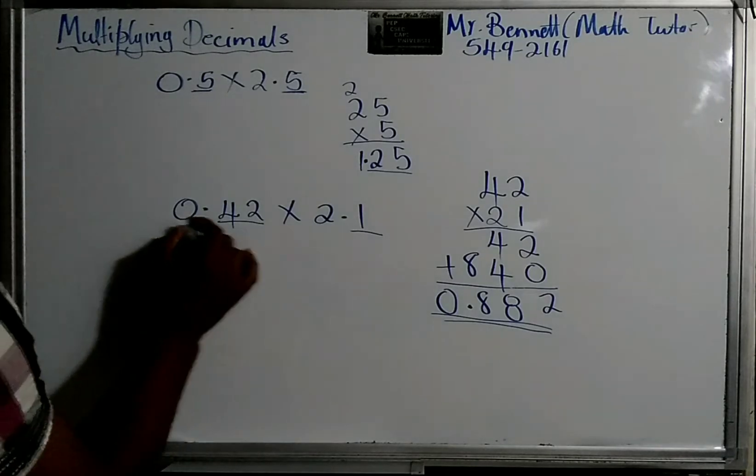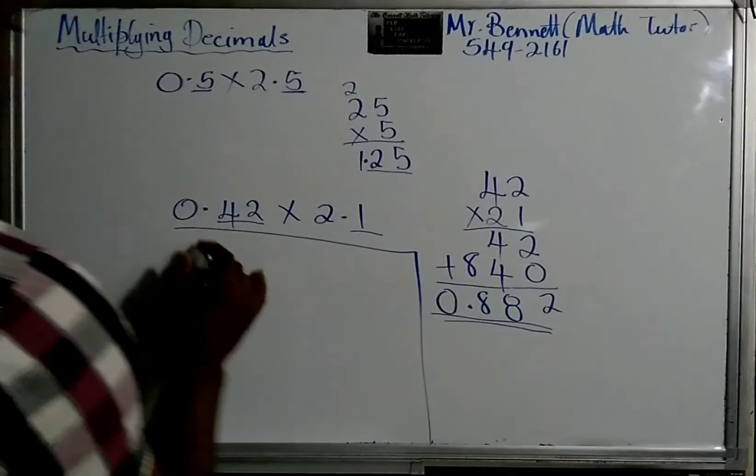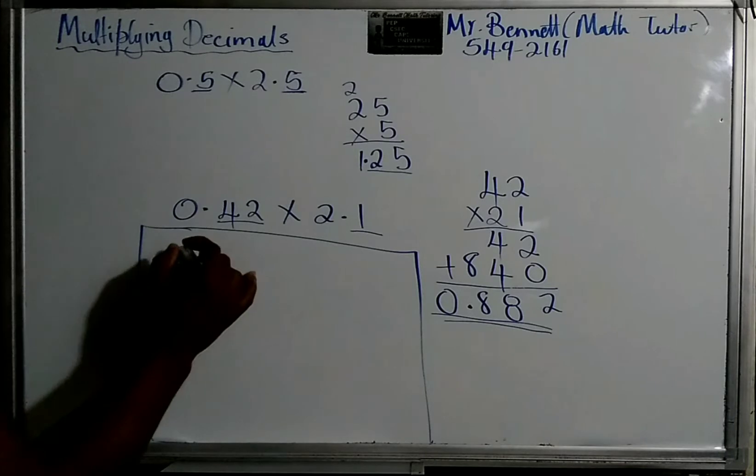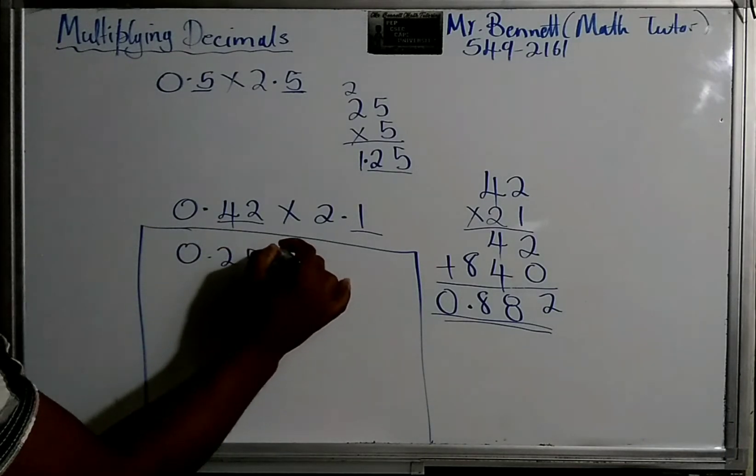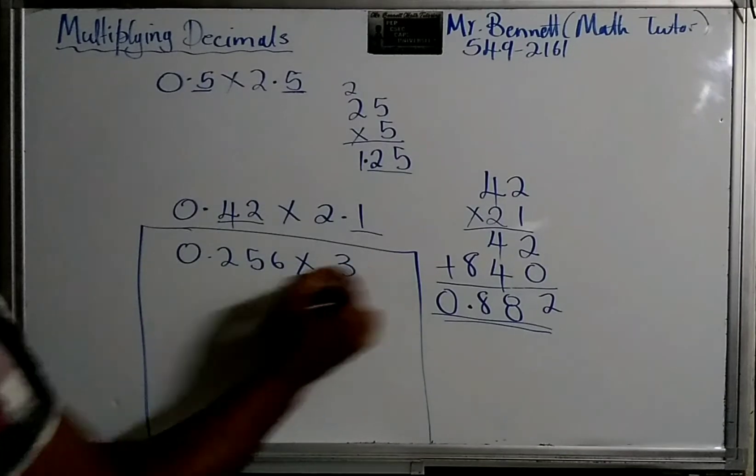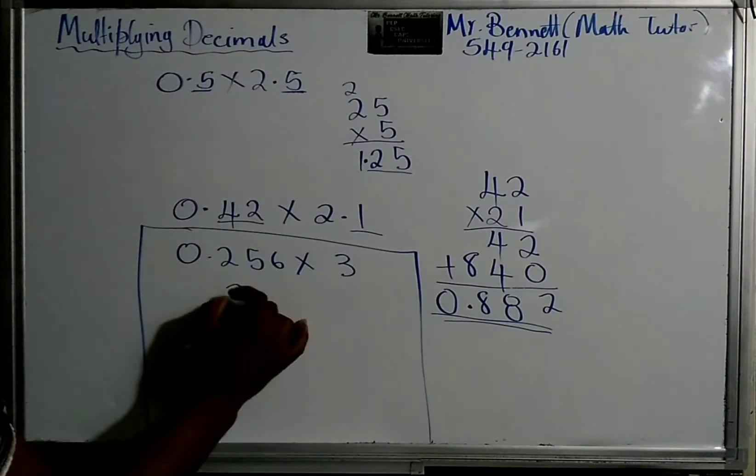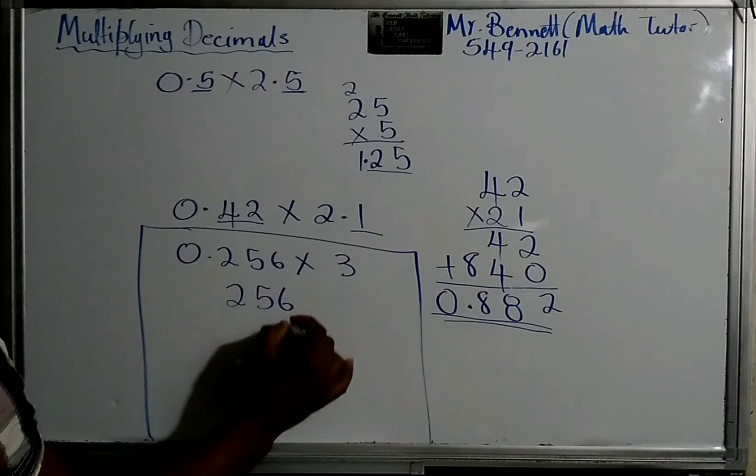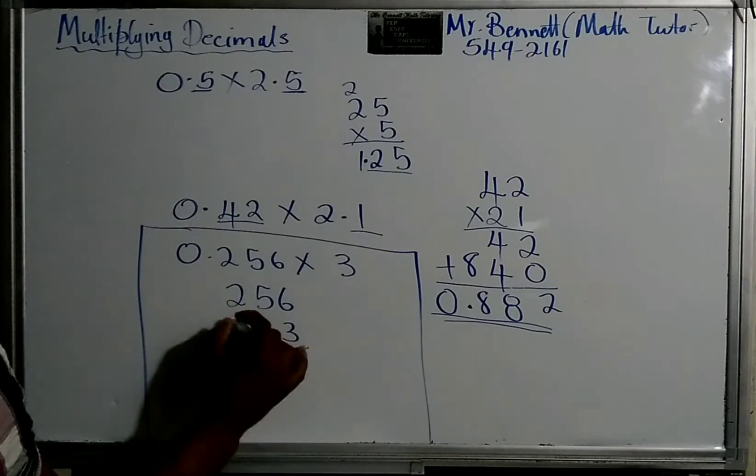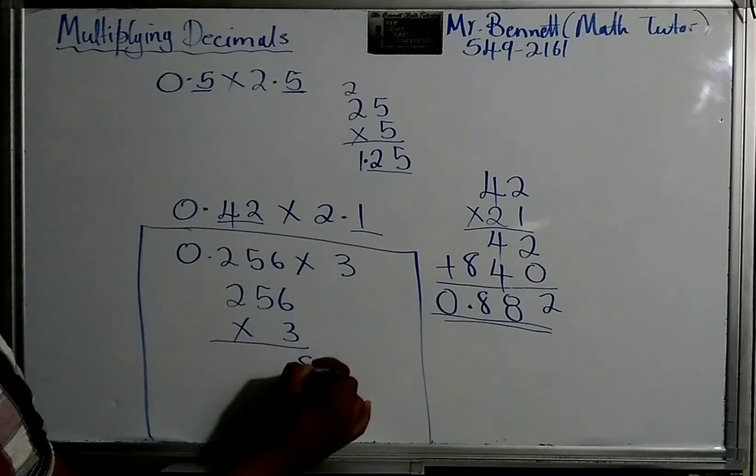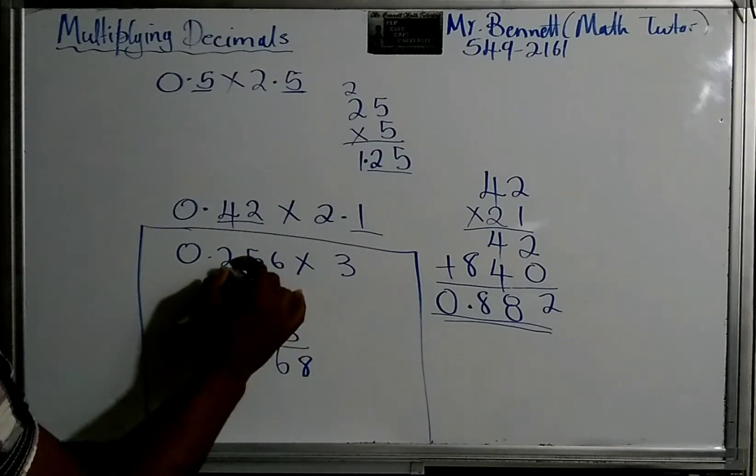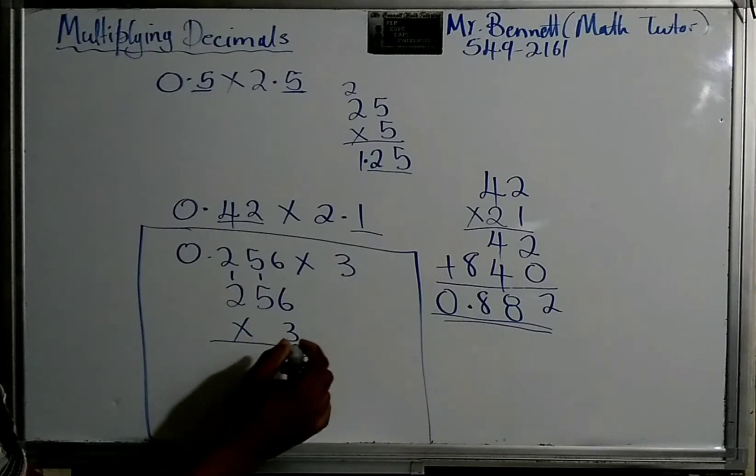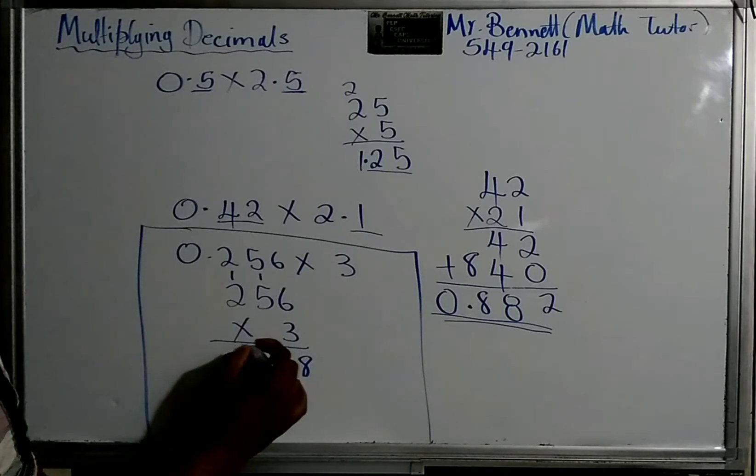Let us look at another one. We do the same thing. 256 times 3. 3, 6 is 18. 8 and 1. 3, 5, 15 and 1, 16. 9 carry 6. 6 carry 1. 3, 2, 6 and 1, 7.